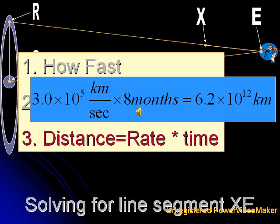When Jill measured the speed of light in 1987, she observed that it traveled 300,000 kilometers per second. She also knows that it took eight months to observe the light traveling from point X to the Earth. If you take 300,000 kilometers per second, multiply it by 60 seconds in a minute, 60 minutes in an hour, 24 hours in a day, and 240 days in eight months, that gives us 6.2 times 10 to the 12 kilometers, or 6.2 trillion kilometers away.